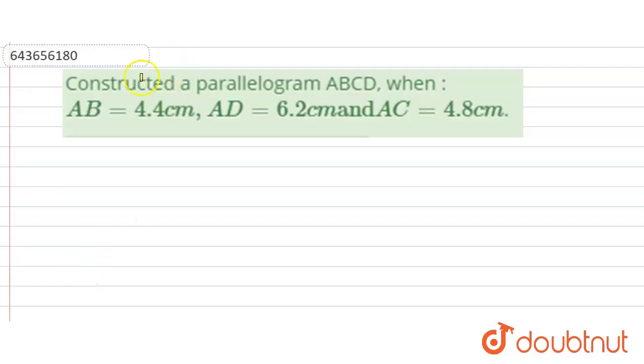So hello students, in this problem we have to construct a parallelogram ABCD when its sides AB is given as 4.4 centimeter, AD as 6.2 centimeter and AC as 4.8 centimeter.